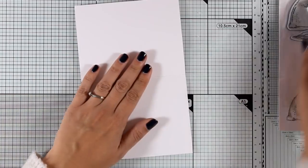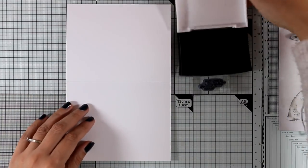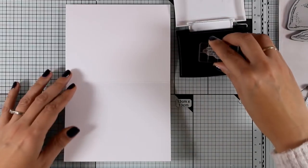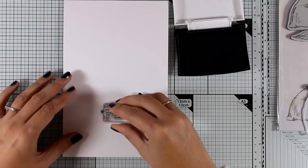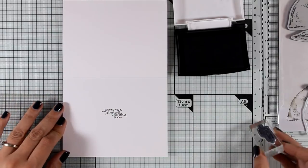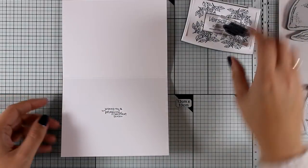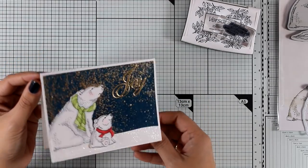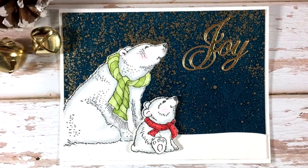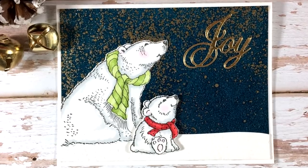On the inside I'm going to stamp one of the sentiments included in the stamp set. I went with the one that says 'Wishing you a magical Christmas season.' I like that it's such a small sentiment since it leaves me enough space to write down anything I like. That was the card for today. I hope you had fun and got inspired to use some embossing patterns all over your backgrounds since they look so gorgeous.